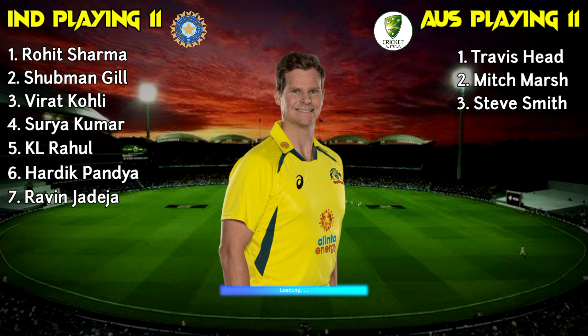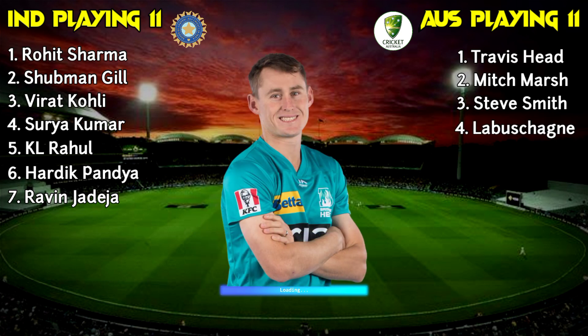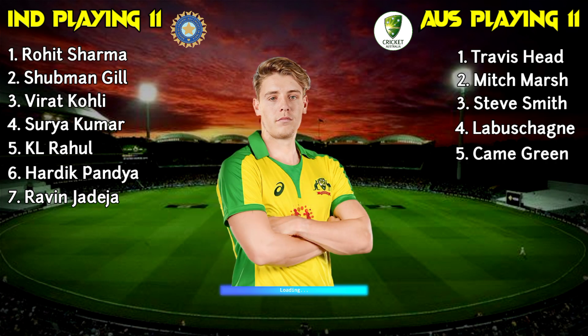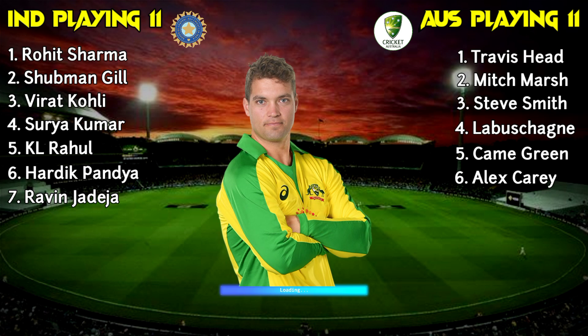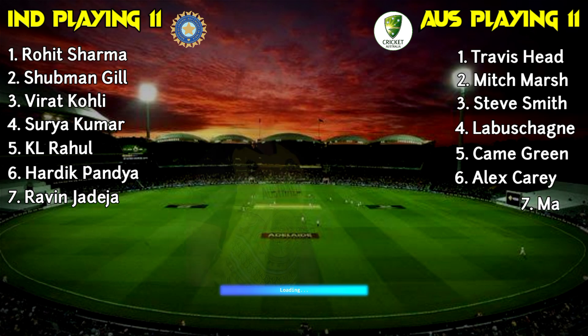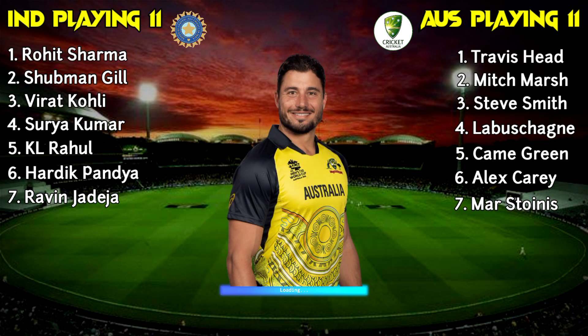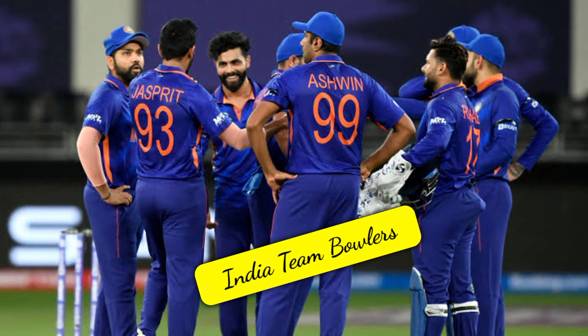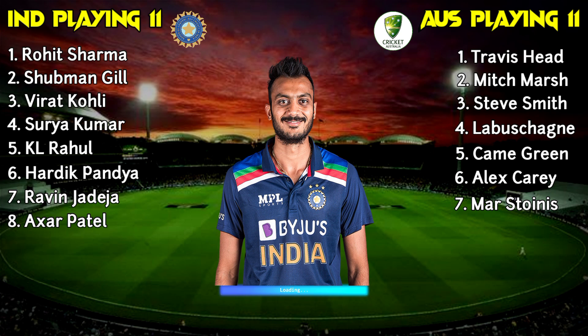Australia Number 3, Steve Smith, captain and batsman; Number 4, Marnus Labuschagne, batting all-rounder; Number 5, Cameron Green, all-rounder; Number 6, Alex Carey, wicketkeeper batsman; Number 7, Marcus Stoinis, all-rounder. India bowlers: Number 8, Axar Patel, all-rounder.